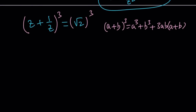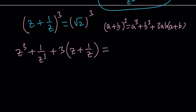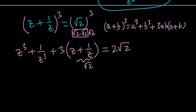If you apply that, you get z cubed plus 1 over z cubed plus 3ab, which is just going to give me 3 because z times 1 over z is 1, times z plus 1 over z. How do you cube square root of 2? It's square root of 2 times square root of 2 times square root of 2, which is 2 times square root of 2. And this is equal to 2 root 2. Since z plus 1 over z equals square root of 2, z cubed plus 1 over z cubed equals 2 root 2 minus 3 root 2, which is negative root 2.